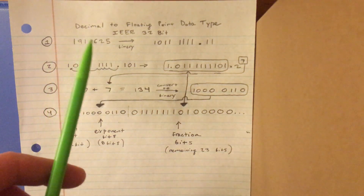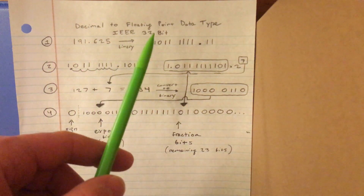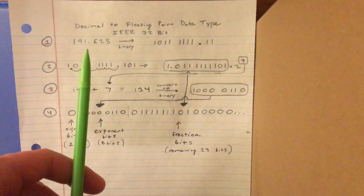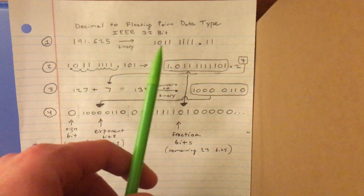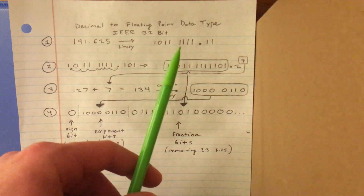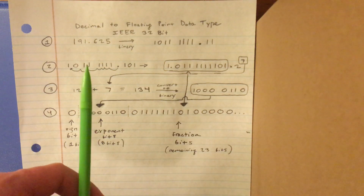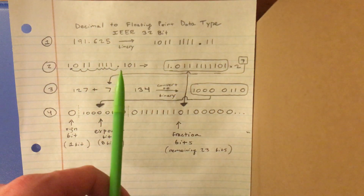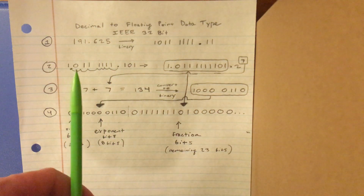This is how to convert a decimal number to IEEE 32-bit notation. Start with your original decimal number, convert it to binary, rewrite the binary number, and move the binary point all the way up to the first bit.